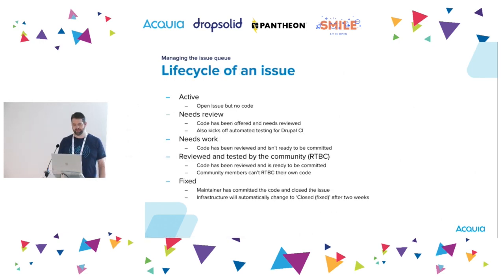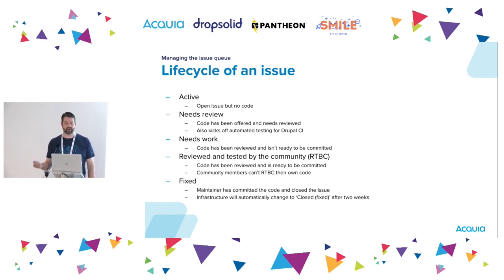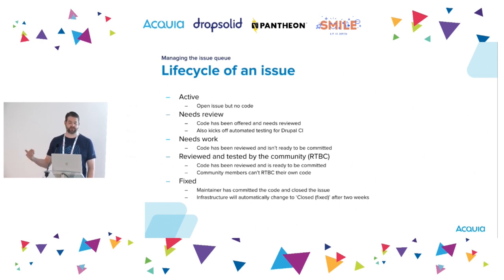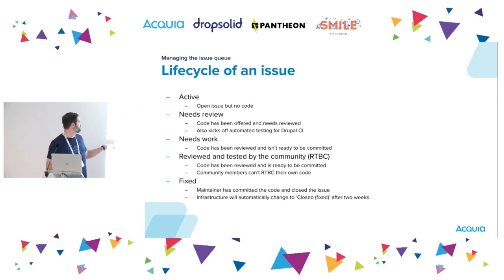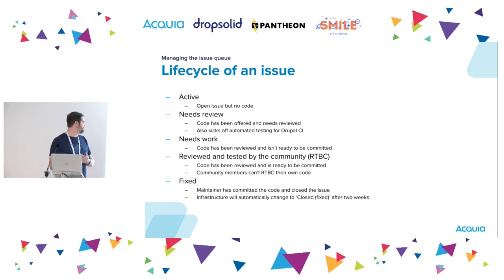The life of an issue will go through several states. At the very beginning is the Active state — the issue is open but no code has been offered yet. When code gets offered and is ready for review, it goes to Needs Review. If you're using Drupal CI, the Needs Review state will also kick off automated testing. If the code is reviewed but not ready yet, it can go to Needs Work. Once the community has concluded it's good to commit, it moves to Reviewed and Tested by Community — you'll see RTBC as an abbreviation. One important thing: you can't RTBC your own code; it needs to be someone else. If the maintainer agrees and commits it, they'll move it to Fixed. After two weeks, infrastructure will automatically change that to Closed Fixed, after which only the maintainer can reopen the issue.